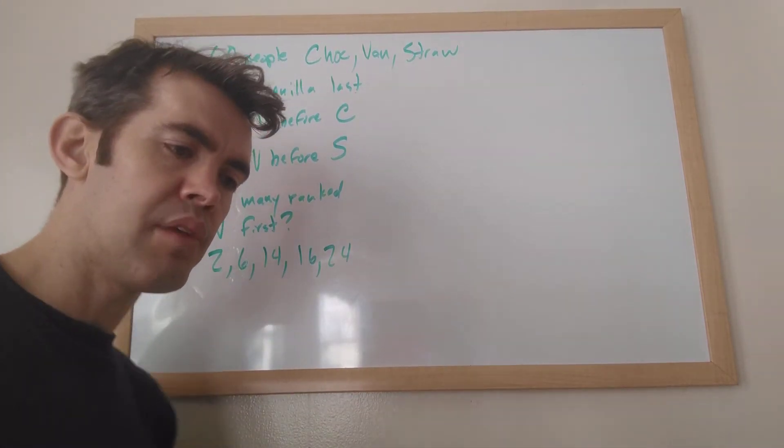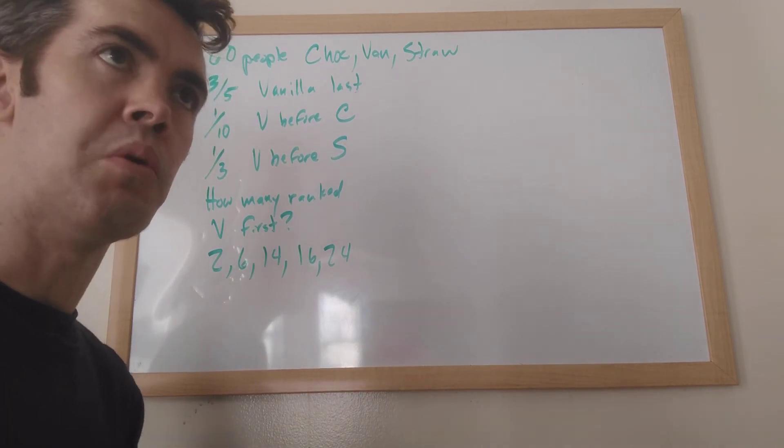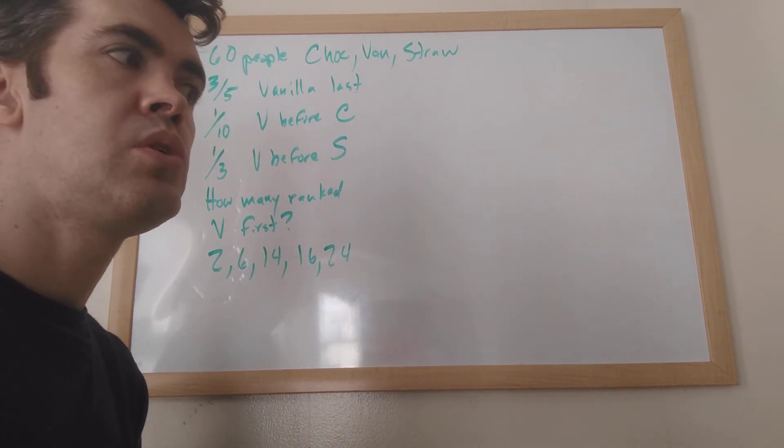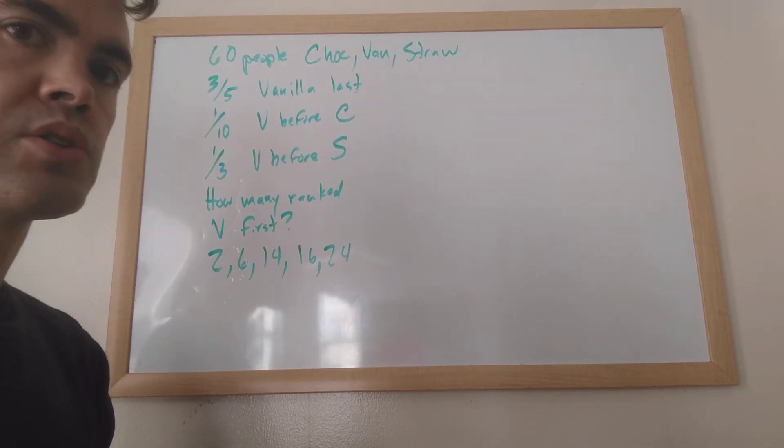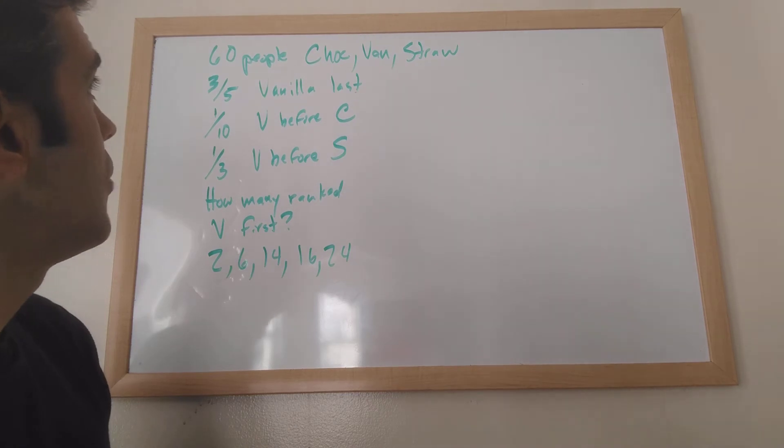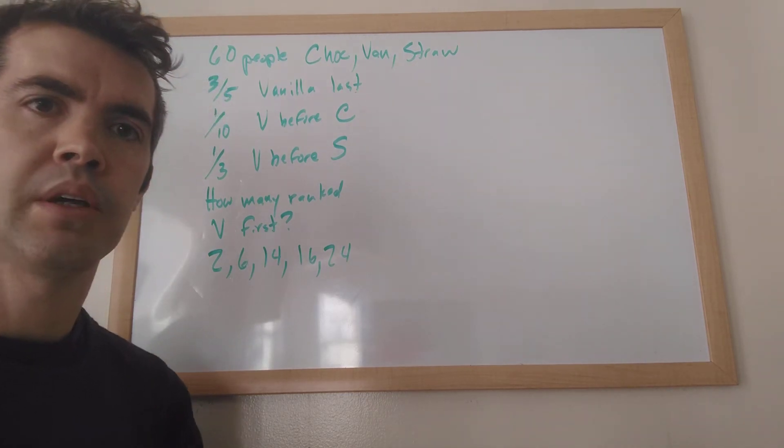And basically it's this. If there are three different things and you can do all three of them at once, or you can do two of them or none of them, then that's a triple overlapping set problem. So does this apply? Can you rank chocolate, vanilla, and strawberry first all at the same time? You can't.